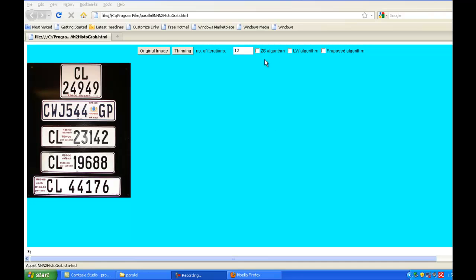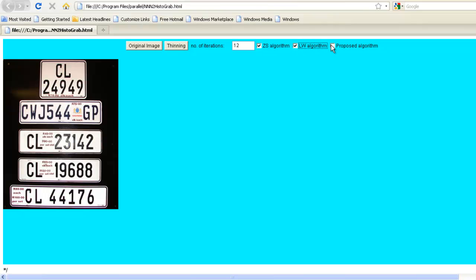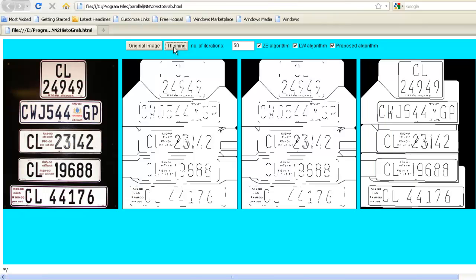This is the output screen. We compare the ZS algorithm, LW, and proposed algorithm. We take the number of iterations as 50 and then we thin the image. As we can see, the previous two algorithms have no clarity in them, and the proposed algorithm is clear to retrieve the data back.